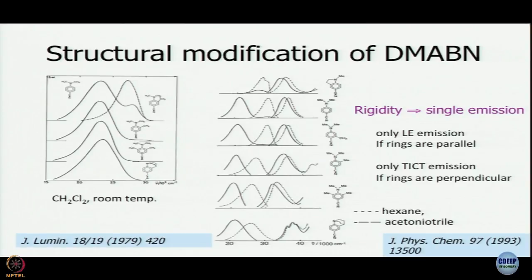Going back to 1993, people tried structural modifications of DMABN. One variant maintains coplanarity, another forcibly destroys it. In all these studies, what was inferred is that the twist takes place. If you do not allow the molecule to twist, you do not see the TICT band. If you force it to 90 degrees, you only see the TICT band, though if linkers are too long, results go awry.